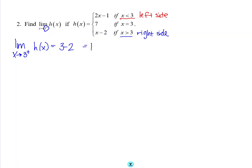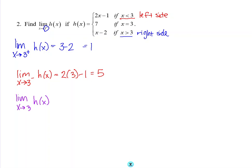I can also find the other limit even though it doesn't ask for it. The limit as x approaches 3 from the left — I would plug 3 in for x in the first line of our equation, and I would get 5. Again, the limit as x approaches 3 of h of x does not exist because the left limit and the right limit are not equal. As additional information, h of 3 — the value of the function at 3 — is represented by the middle equation, which equals 7.